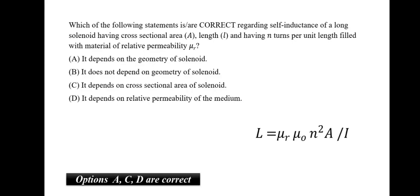Which of the following statement is correct regarding self-inductance of a long solenoid having cross-sectional area A, length L and having n turns per unit length filled with the material of relative permeability mu r? To understand this, let us just put this self-inductance formula which is mu r mu naught n square A by L. So, we know from this that the geometry of the solenoid is very important. The cross-sectional area will also be important and the relative permeability of the medium will be important. Thus, A, C and D are correct options.